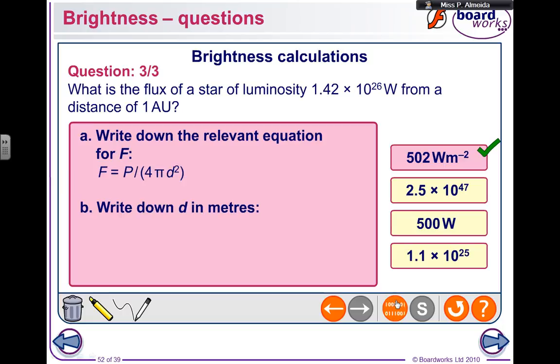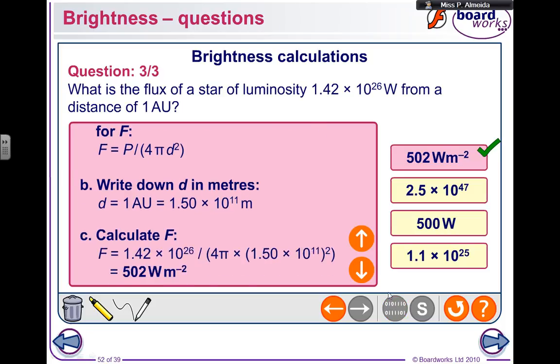So I wrote down the equation. Because this distance is in meters, I get this astronomical unit into meters. So one astronomical unit is 1.50 times 10 to the power of 11 meters. I substitute all the numbers into the equation and I get the flux of 502 watts per meter squared or watts meter minus 2.